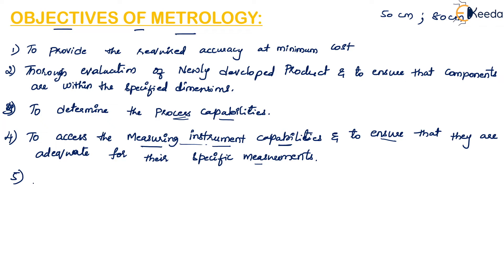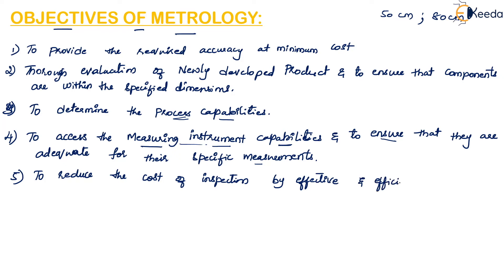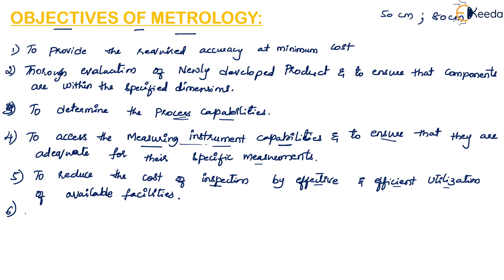The next objective is to reduce the cost of inspection by effective and efficient utilization of available facilities. With the help of metrology, we can reduce the cost of inspection by properly using the available facilities.